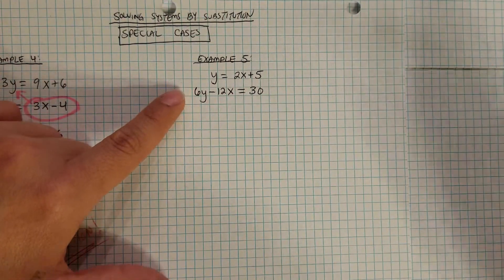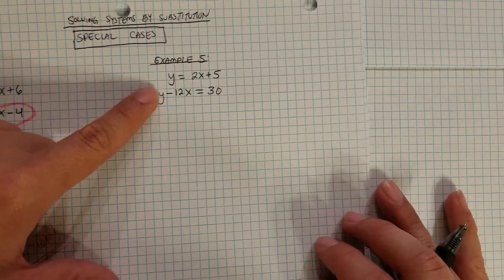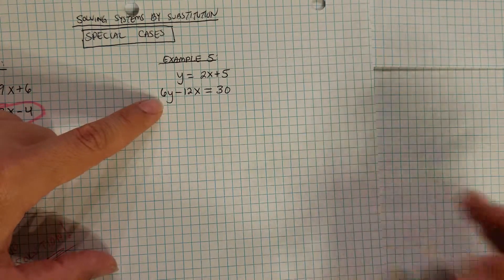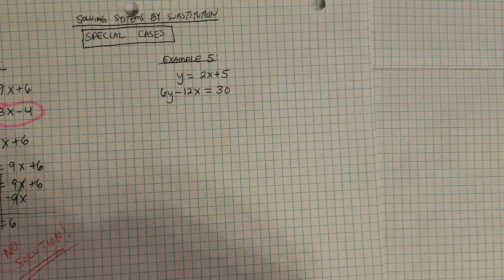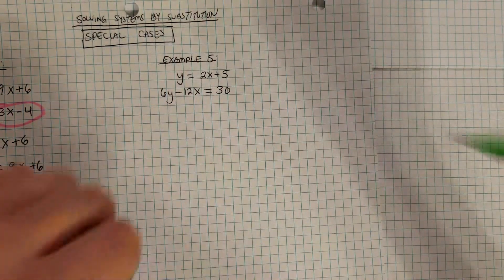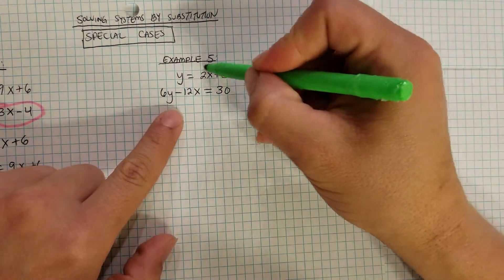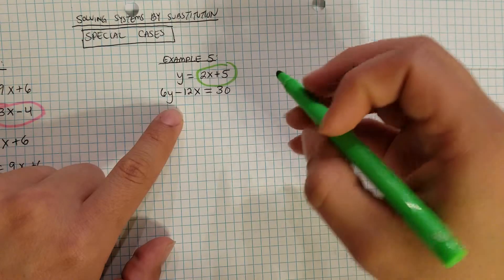Let's have another special case. So we have another example, y is equal to 2x plus 5, and then 6y minus 12x is equal to 30. So same idea, same process. We have the y by itself on one side. So y is equal to 2x plus 5.